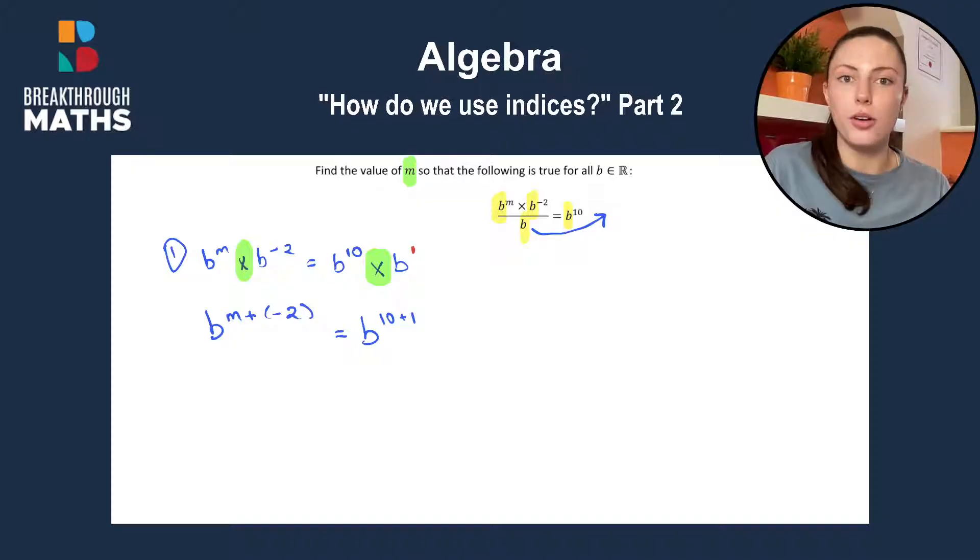So we have to remember that here. So we're not adding on plus 0 or just keeping it at 10. We have to remember we have to add on a 1 here because B by itself is B to the power of 1.